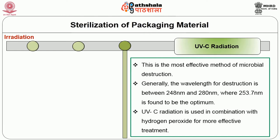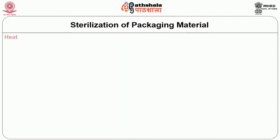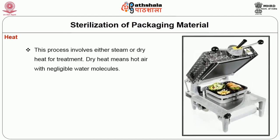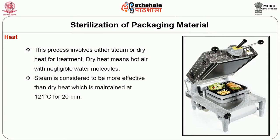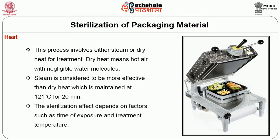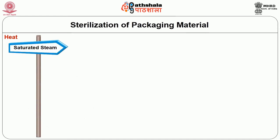UV radiation is used in combination with hydrogen peroxide for more effective treatment. Heat is the economical way of sterilizing the packaging material. This process involves either steam or dry heat for treatment. Dry heat means hot air with negligible water molecules. Steam is considered to be more effective than dry heat, which is maintained at 121 degrees Celsius for 20 minutes. The sterilization effect depends on factors such as time of exposure and treatment temperature.